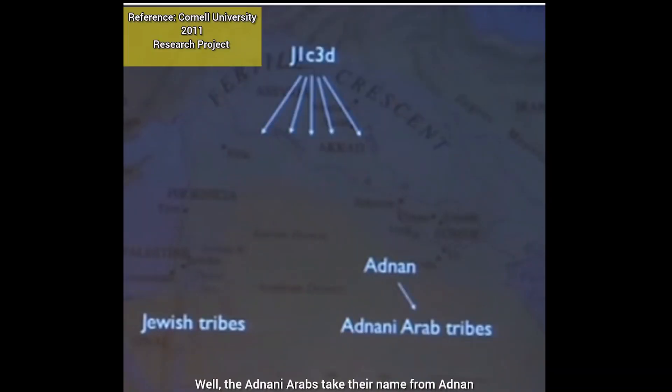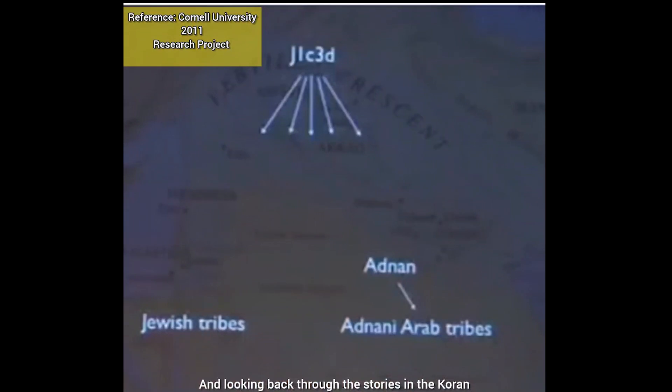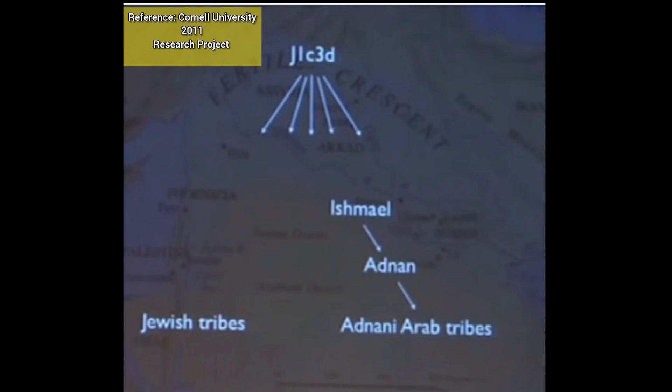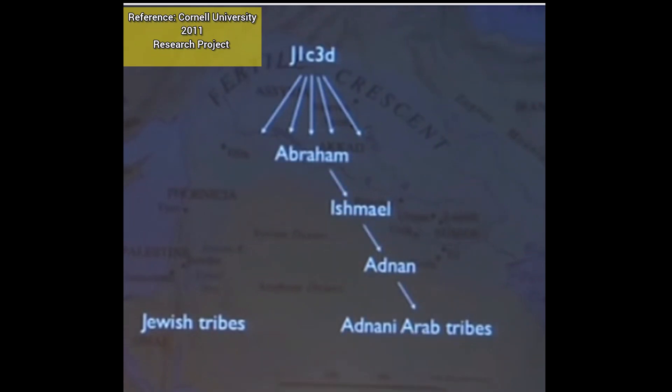The Adnani Arabs take their name from Adnan, and looking back through the Quran and the Torah, Adnan was the son of Ishmael, who was the oldest son of Abraham. Ishmael is generally considered by the Quran to be the founder of the Arab tribes.